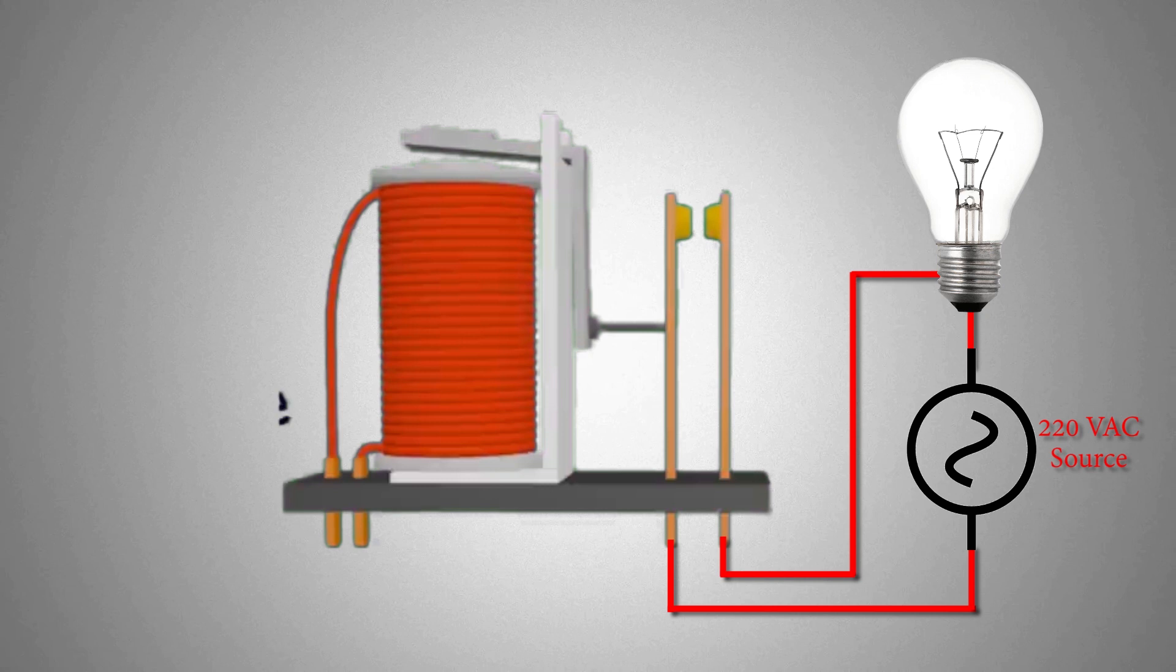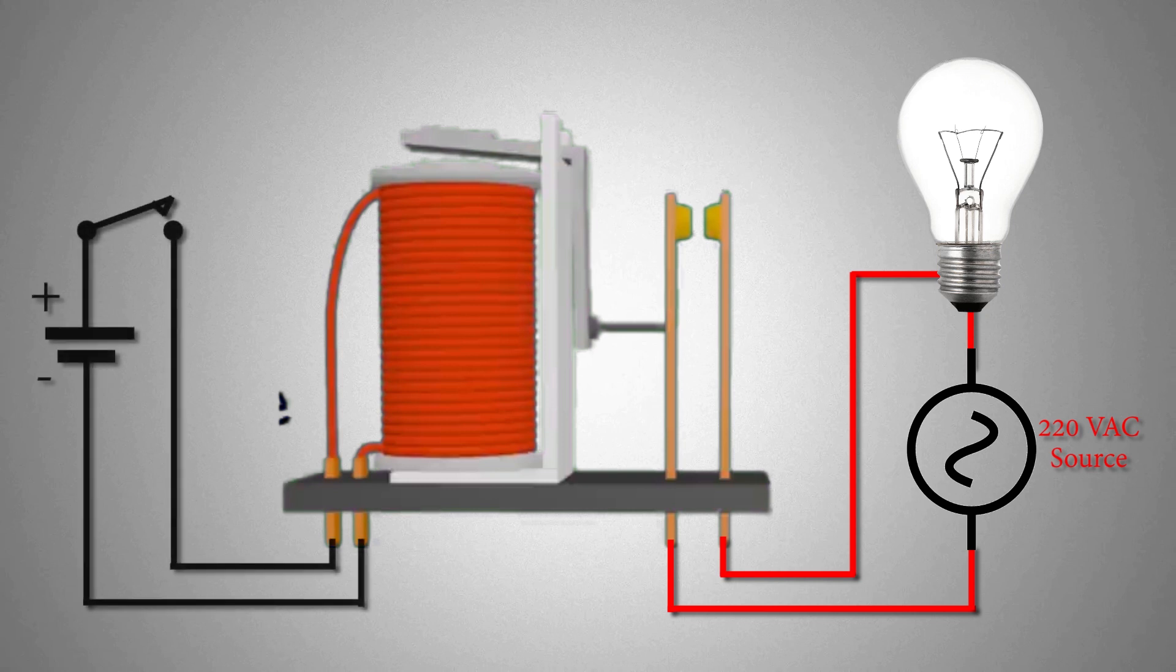Here we have a bulb and an AC power source connected in series with the relay normal open contacts. The relay coil is connected to a DC voltage source through a push button.